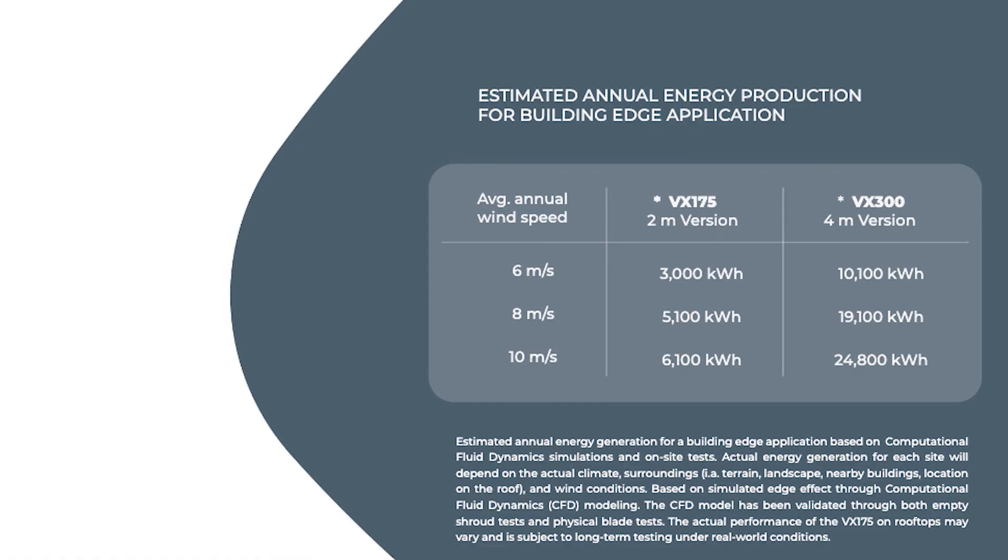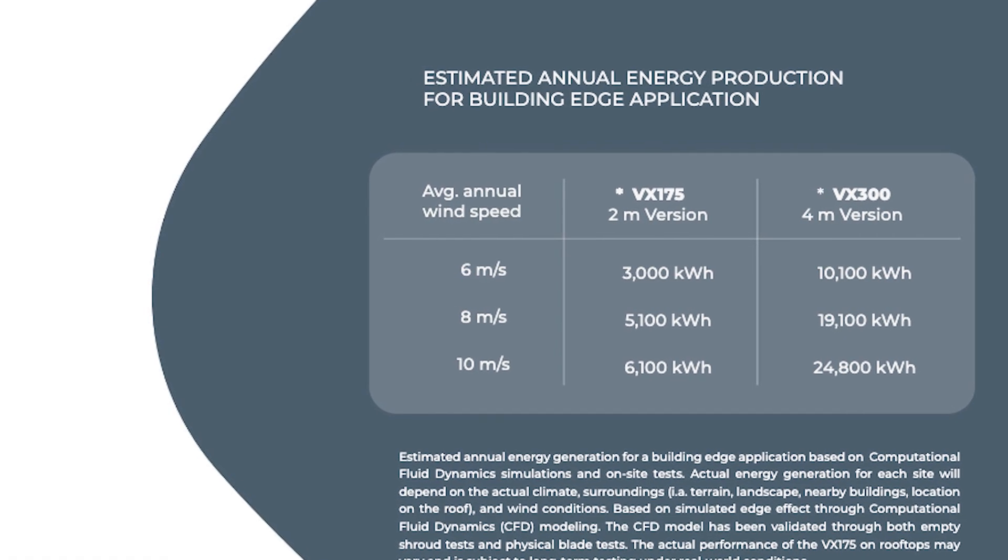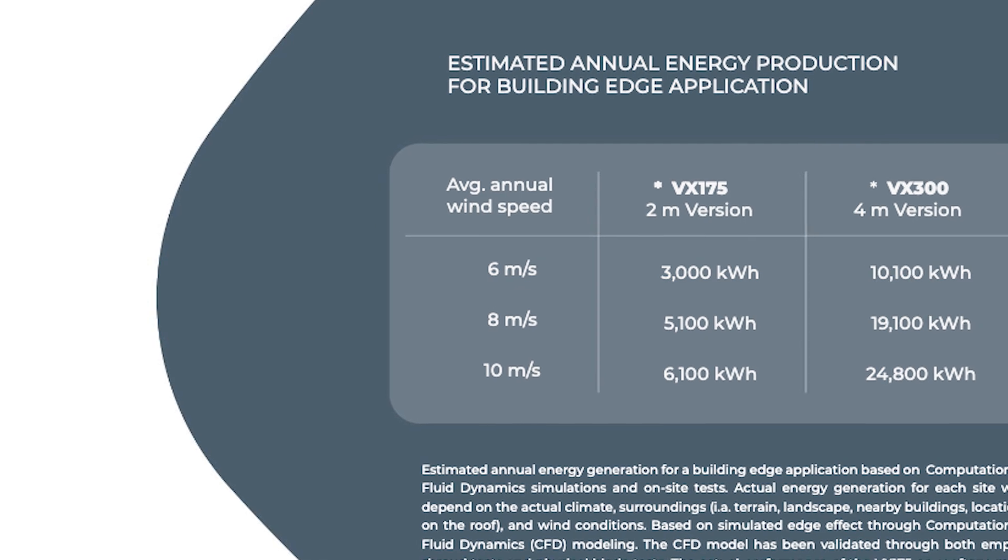As the wind speed increases to 6.5 meters per second, the energy output rises to 5,000 kilowatt hours, demonstrating its ability to adapt to varying wind conditions.